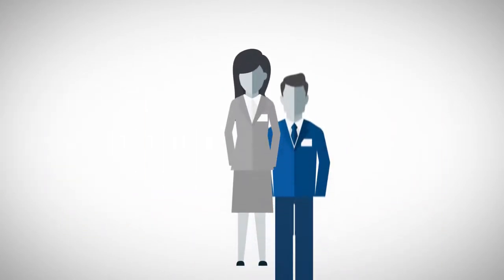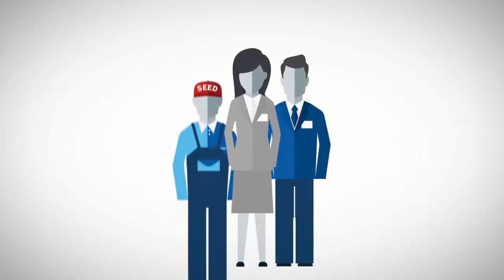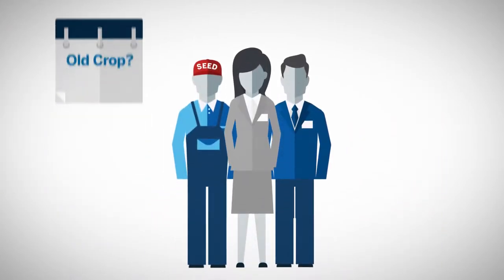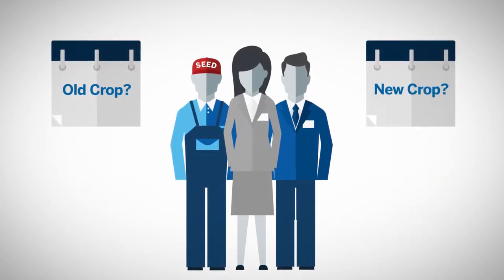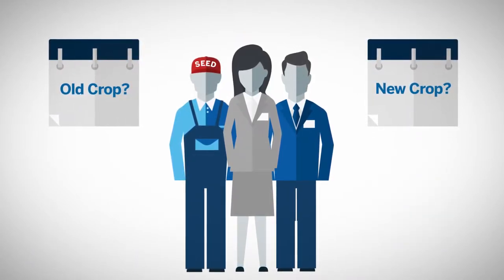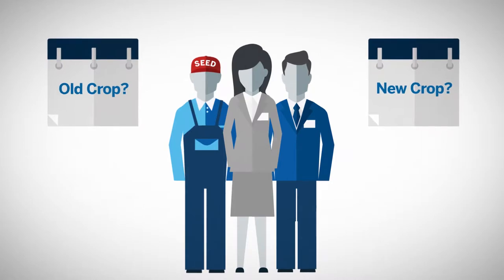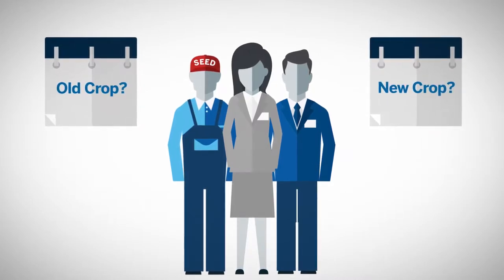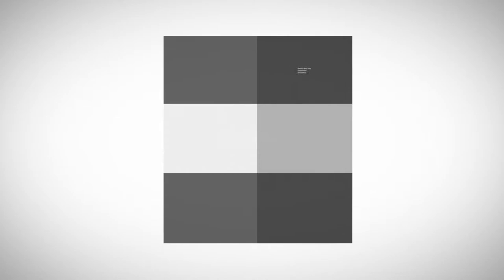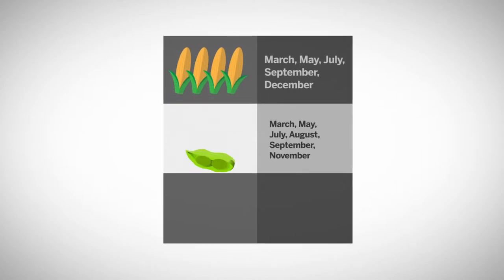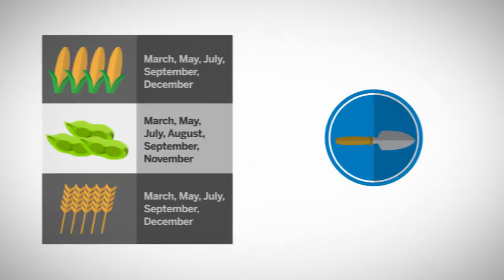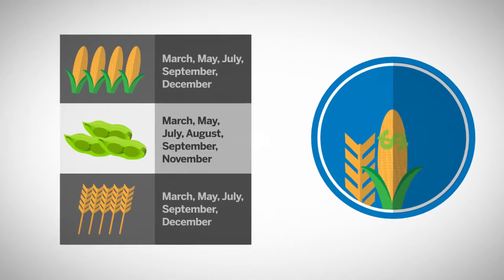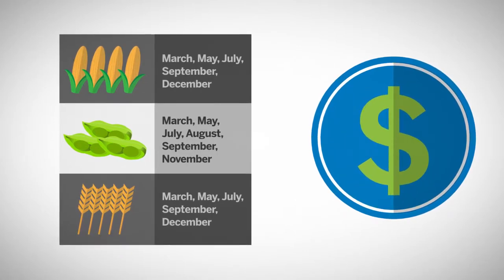Have you ever heard traders, analysts, or producers refer to an old crop month or a new crop month? What does that mean exactly? What makes one futures month old crop and another new crop? The standardized trading months for corn, soybean, and wheat futures reflect the seasonal patterns for planting, harvesting, and marketing the underlying crop.